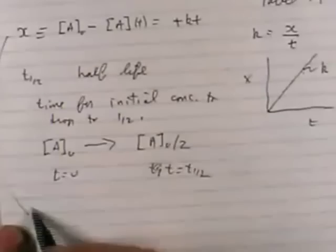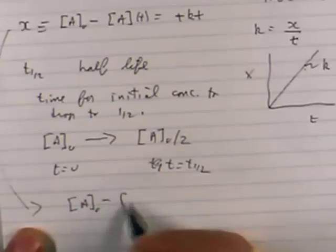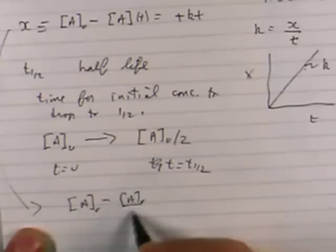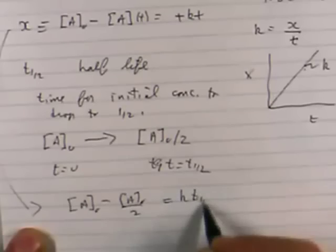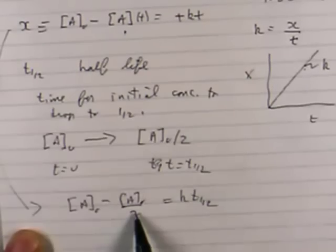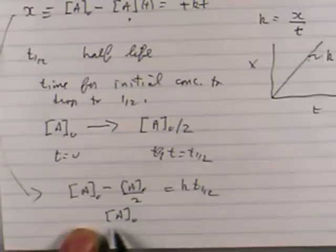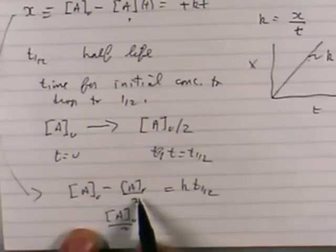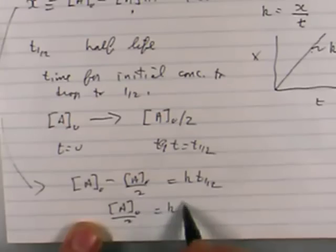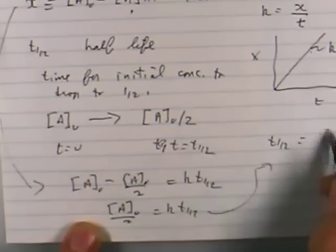And I can easily find out from this equation what that is. A naught minus A naught divided by two is equal to K T one-half. That's all I've done here - I've put in A of T is equal to A naught divided by two. So this is going to be equal to A naught divided by two, one minus a half, is equal to K T one-half. Or the half-life is equal to A initial divided by two rate constant.